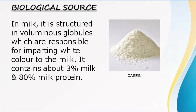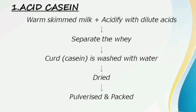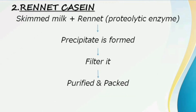Milk is mainly white in color because of casein. There are two types of casein: acid casein and rennet casein. To prepare acid casein, you take skimmed milk, heat it, and add dilute acid to acidify it, causing the protein to separate. You then have to separate and dry it. For rennet casein, you add a proteolytic enzyme called rennet to form a precipitate, then filter, purify, and pack it.